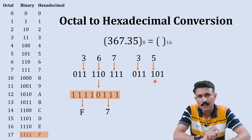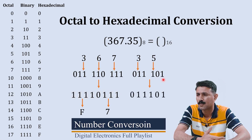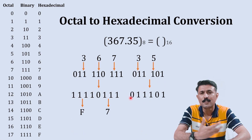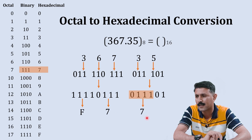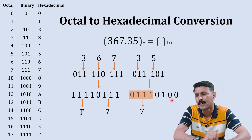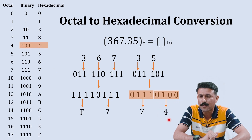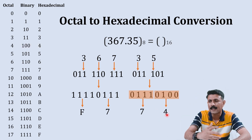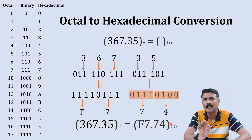We have now converted the integer part to hexadecimal. For the fractional part, we follow the same principle — combine the binary digits as zero one one one zero one, then group from the left into clusters of four. The first group zero one one one is equivalent to seven. The remaining two bits zero and one get two zeros added, making zero one zero zero, which is equivalent to four. So the complete hexadecimal equivalent is F7.74.